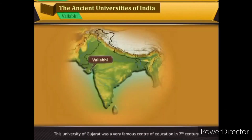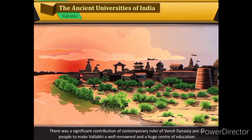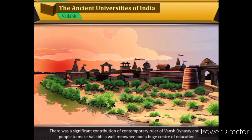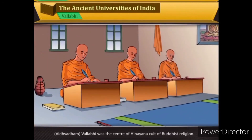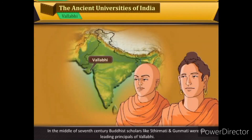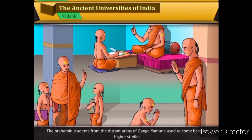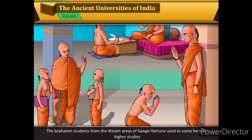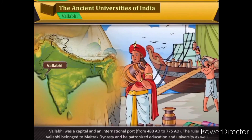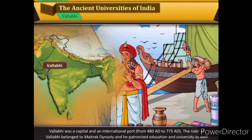Vallabhi University of Gujarat was a very famous center of education in the seventh century. Contemporary rulers and people made great contributions to make Vallabhi a well-renowned and large center of education. It was the center of the Hinayana cult of Buddhist religion in the middle of the seventh century. Buddhist scholars like Sthiramati and Gunamati were the leading principals of Vallabhi. Brahmin students from distant areas of the Ganga-Yamuna region came here for higher studies. Chinese traveler Yijing noted that Vallabhi competed with the famous education center Nalanda.